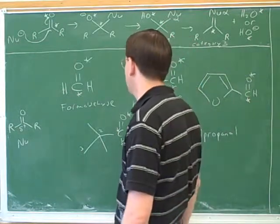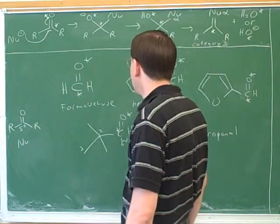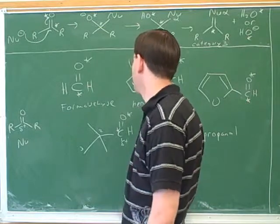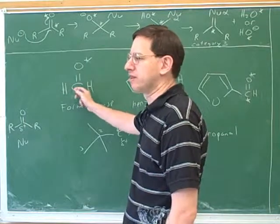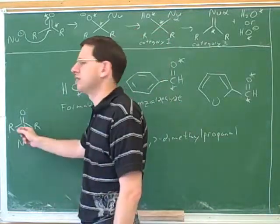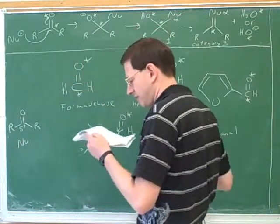So we talked about last time, a good way to do a cross aldol condensation is for your electrophile, you want to use, say, an aldehyde with no alpha hydrogens. Then you know that will be the electrophile. And then you probably want to use a ketone as the nucleophile that does have alpha hydrogens.